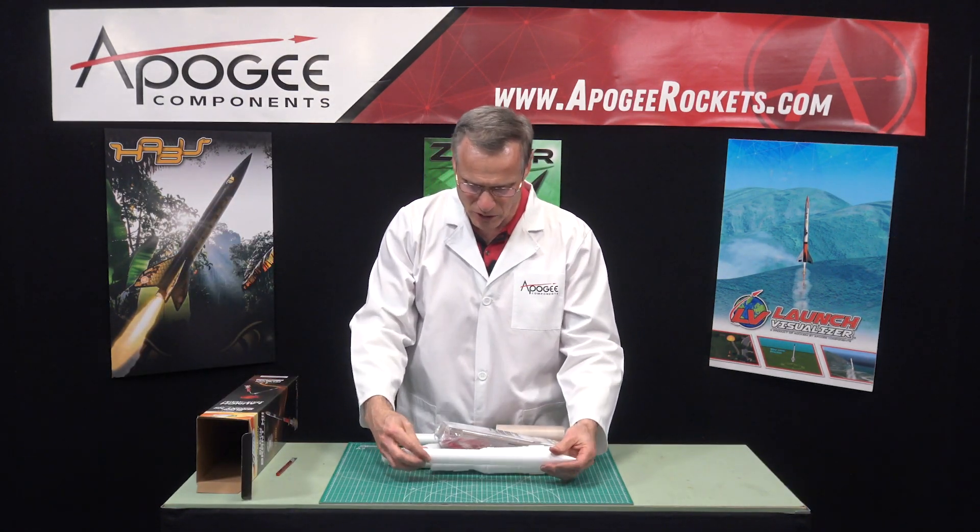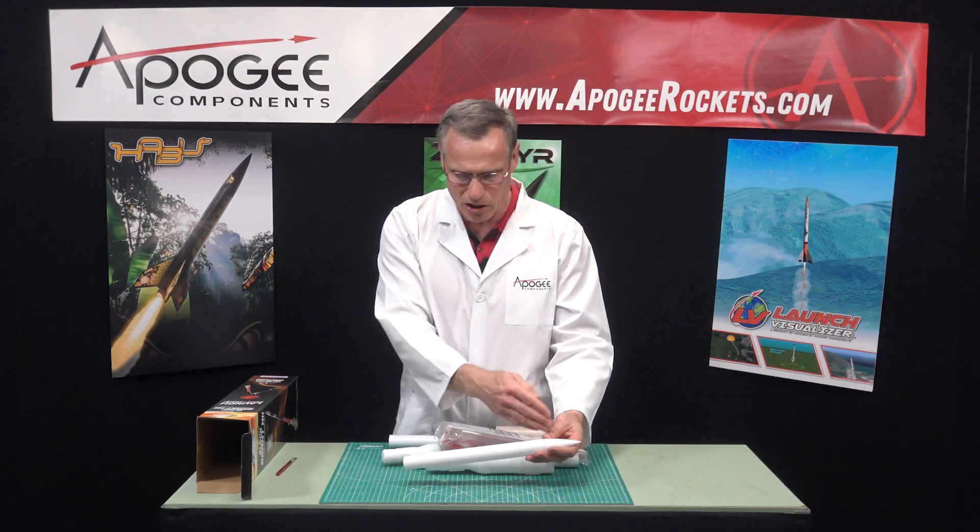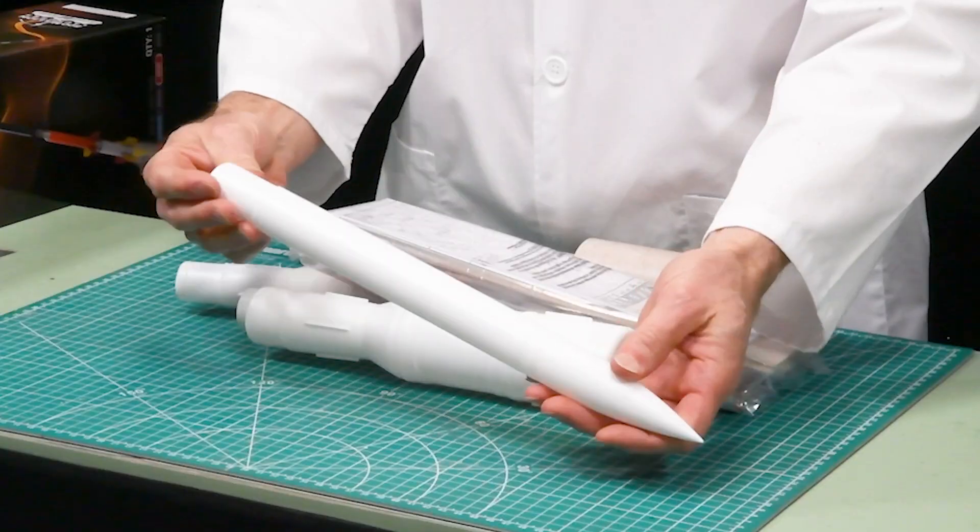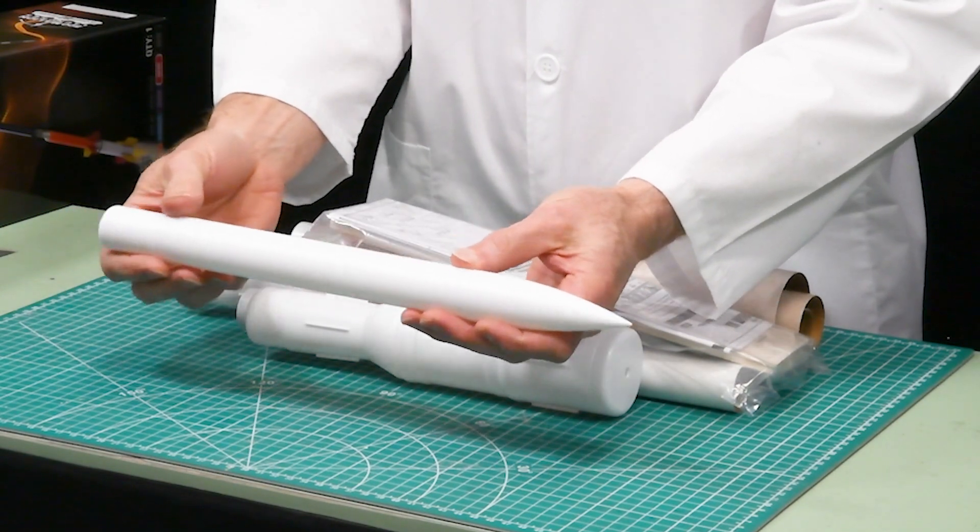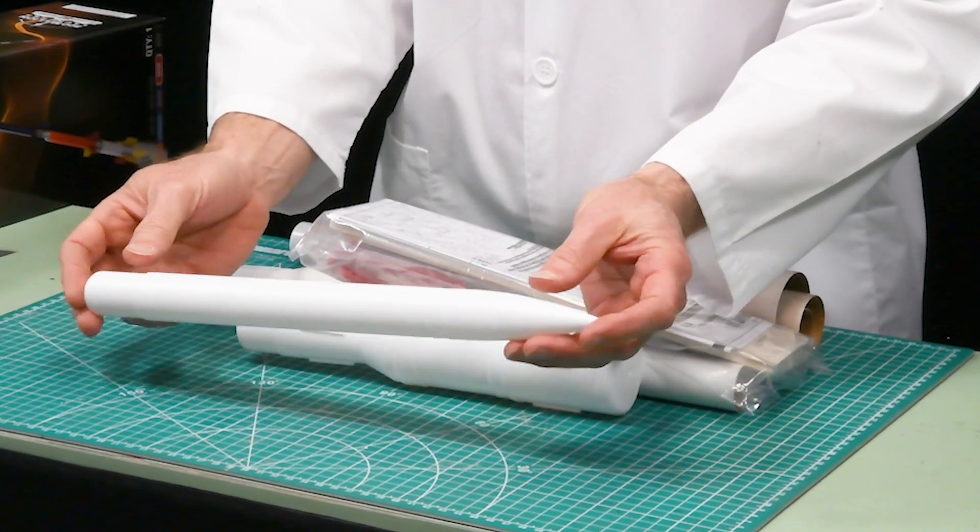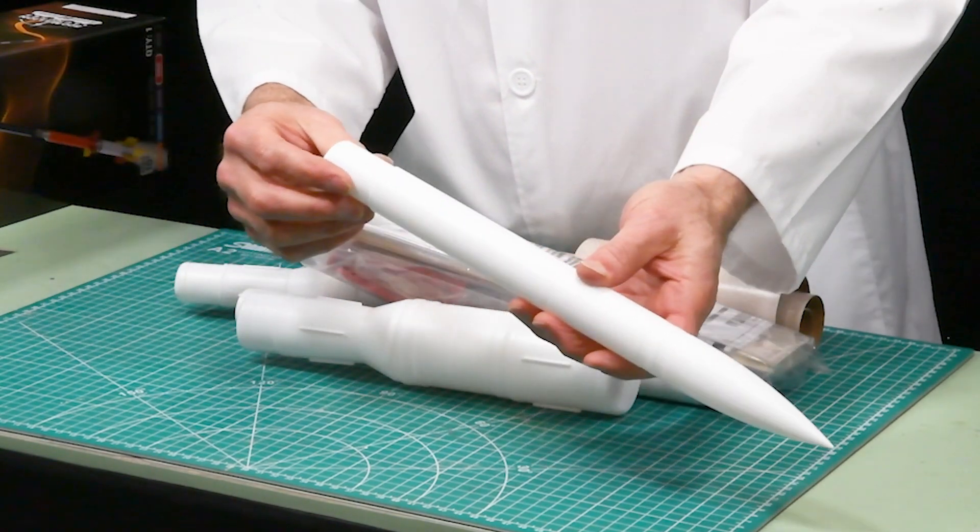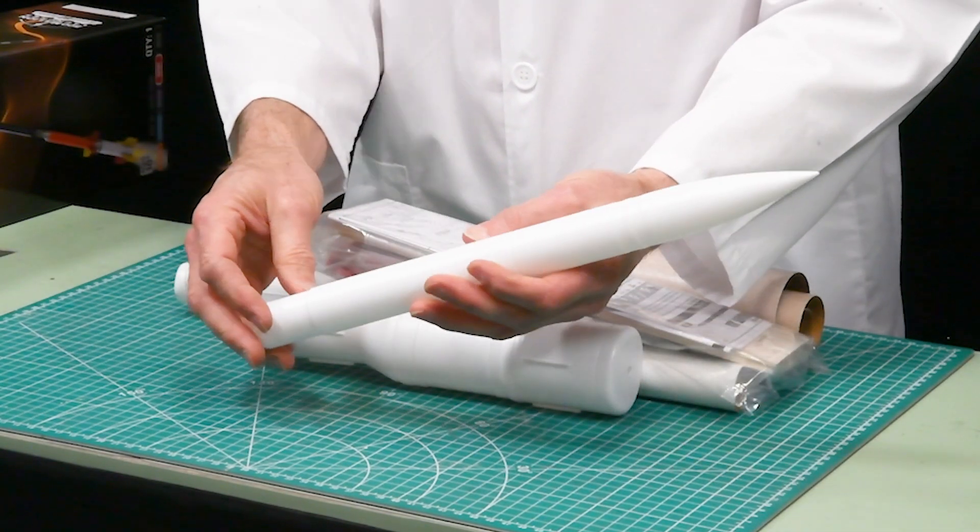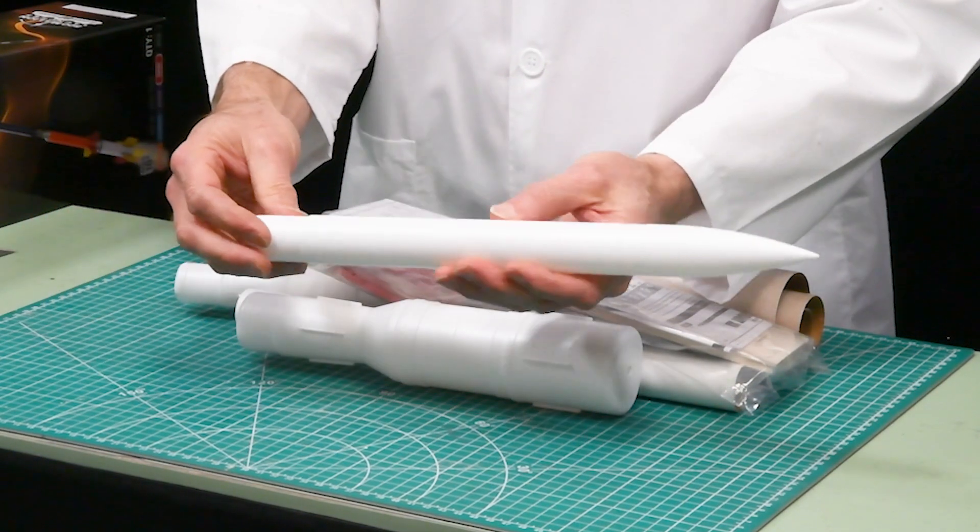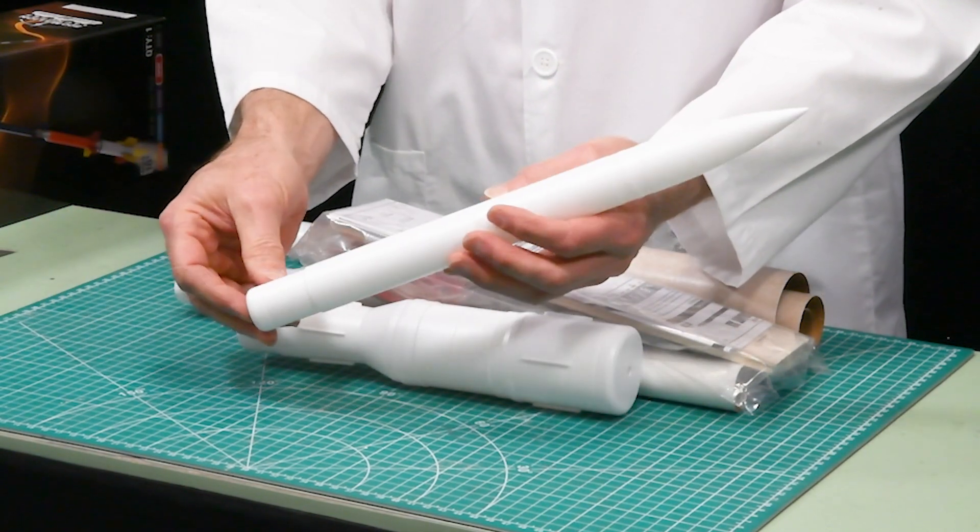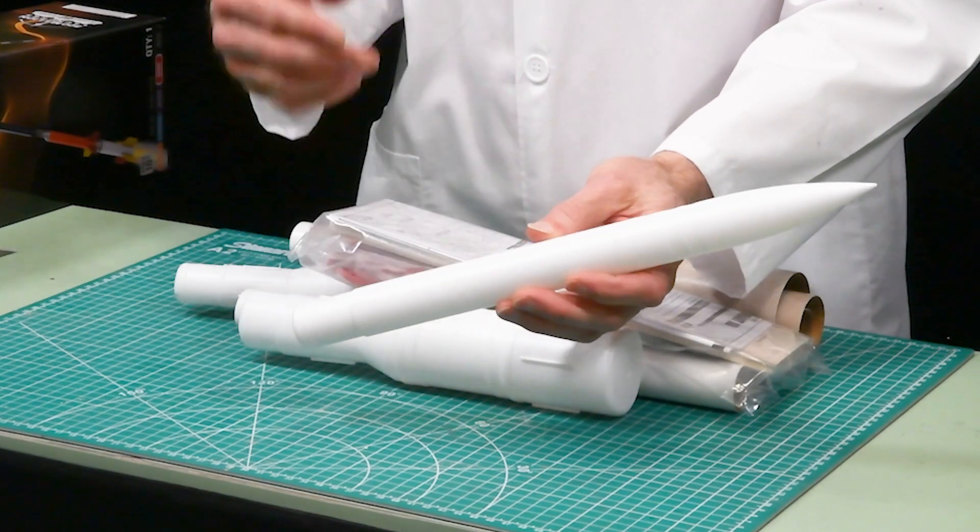First off, what I'm noticing is this big, long, plastic nose cone. This is beautiful. Man, that thing is at least like 12 inches long. I don't know the diameter off the top of my head, but it kind of looks like a BT55, which would be about 1.3 inches in diameter, if I'm correct.